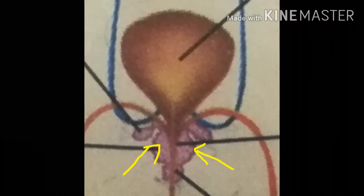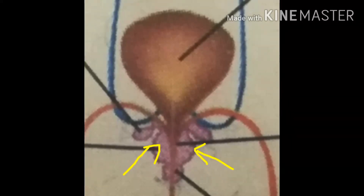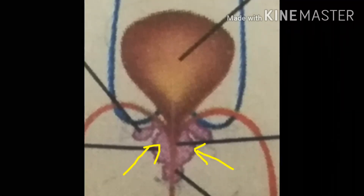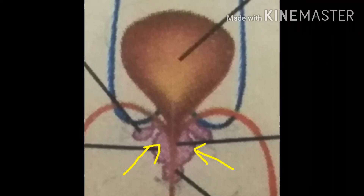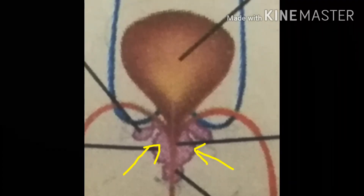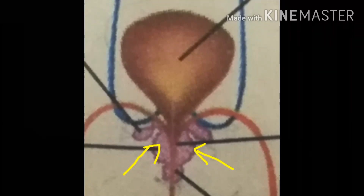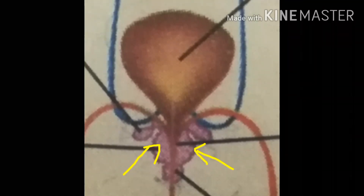Next we are going to look at the prostate glands. Their shape is bilobed and their location is surrounding the urethra close to its origin from the bladder, as shown in the diagram on screen. Its function is to make an alkaline secretion and pour it into the semen, which neutralizes the acidic effect in the female's vagina.